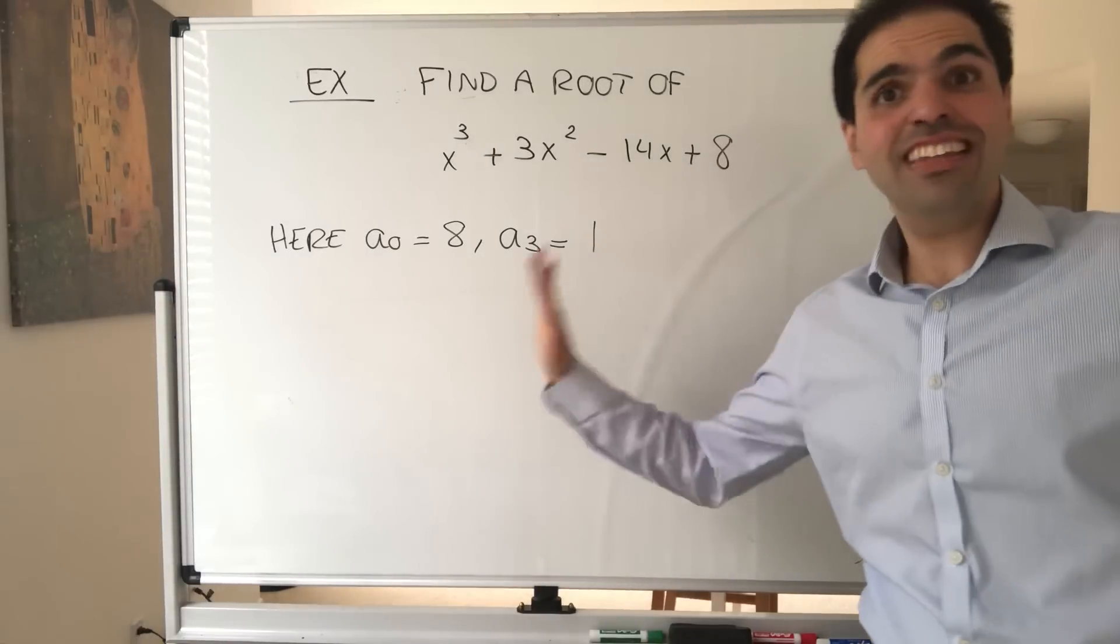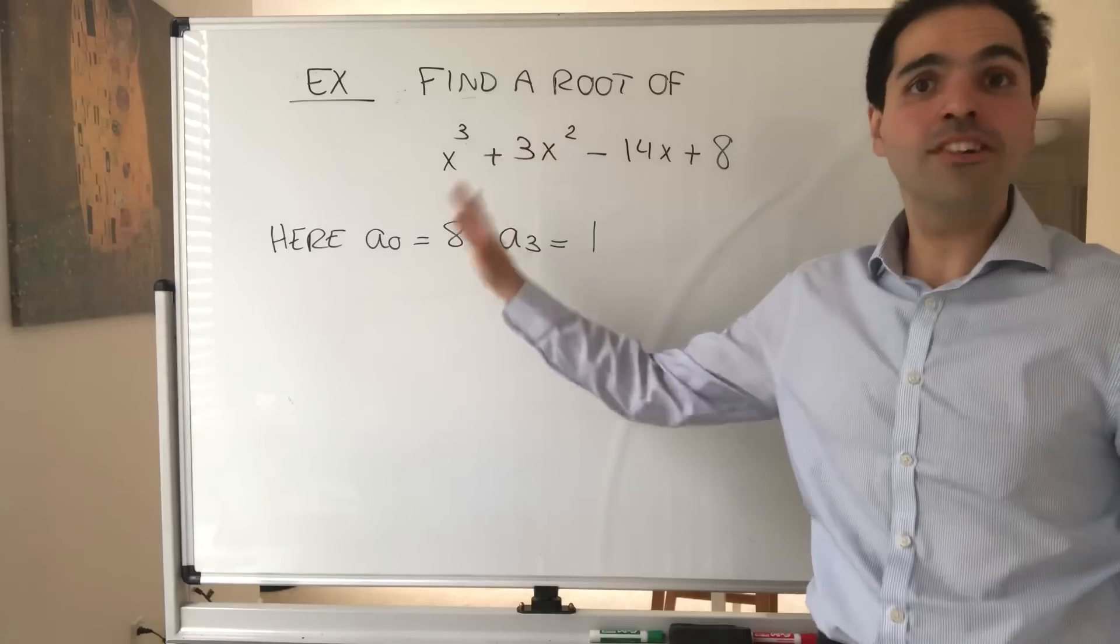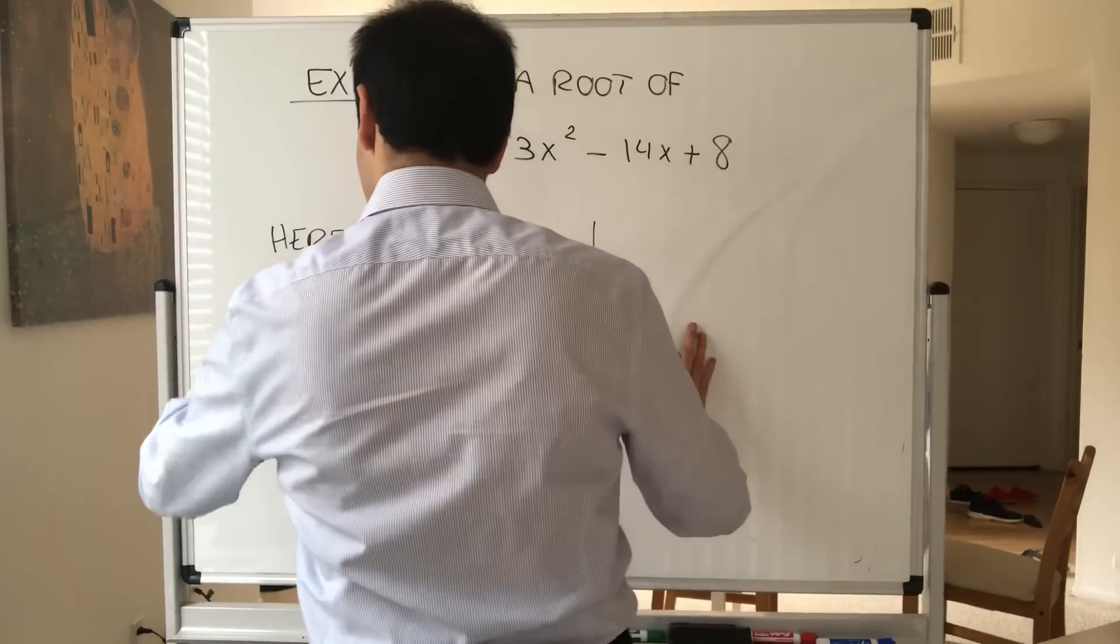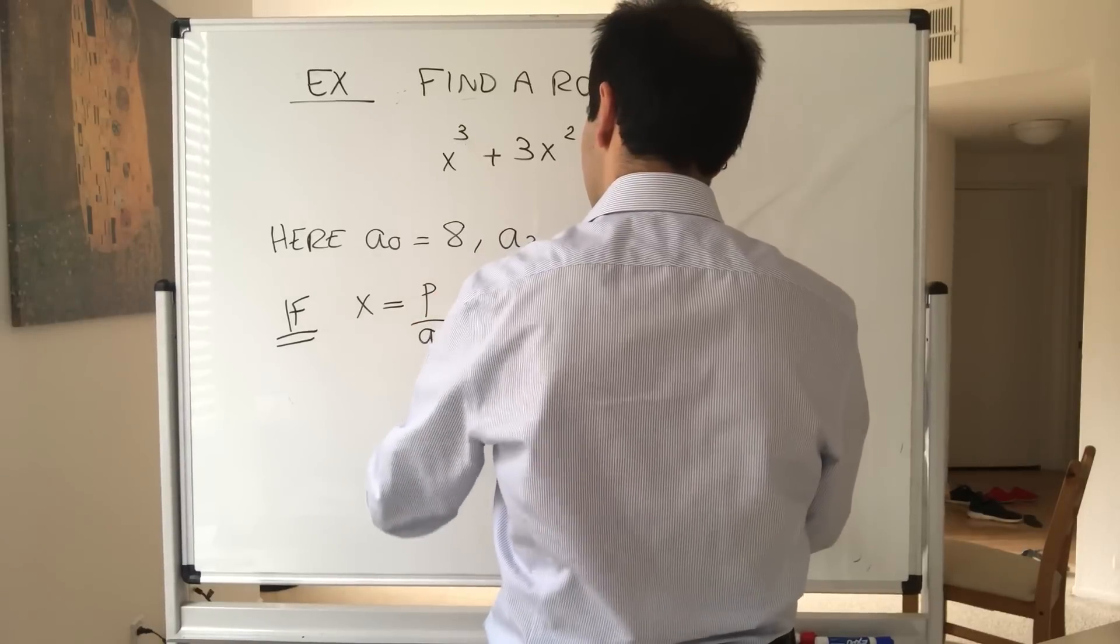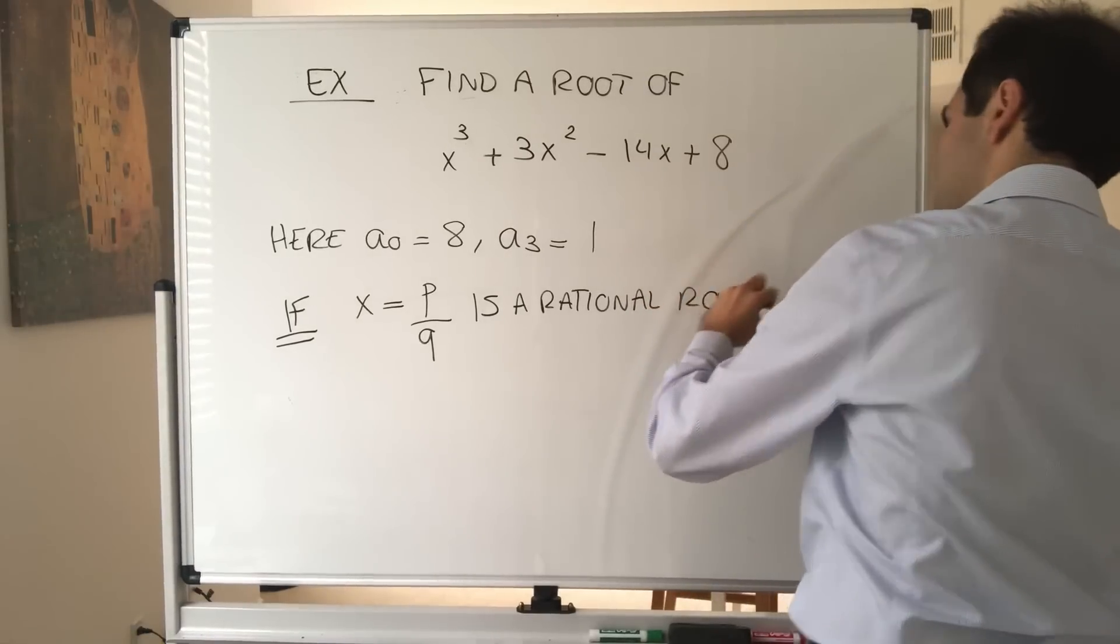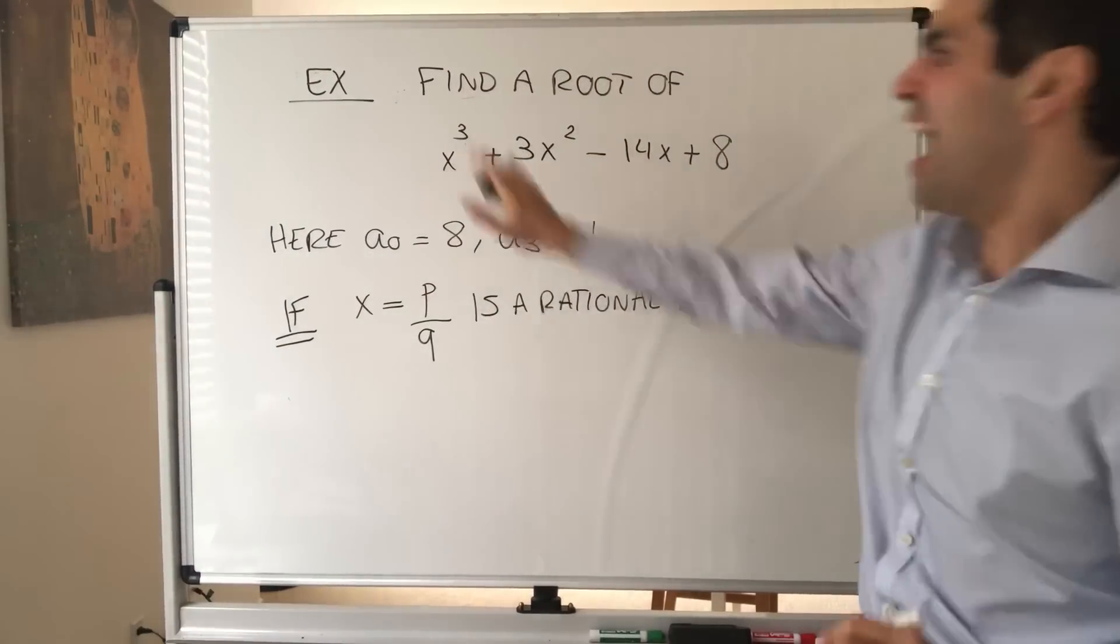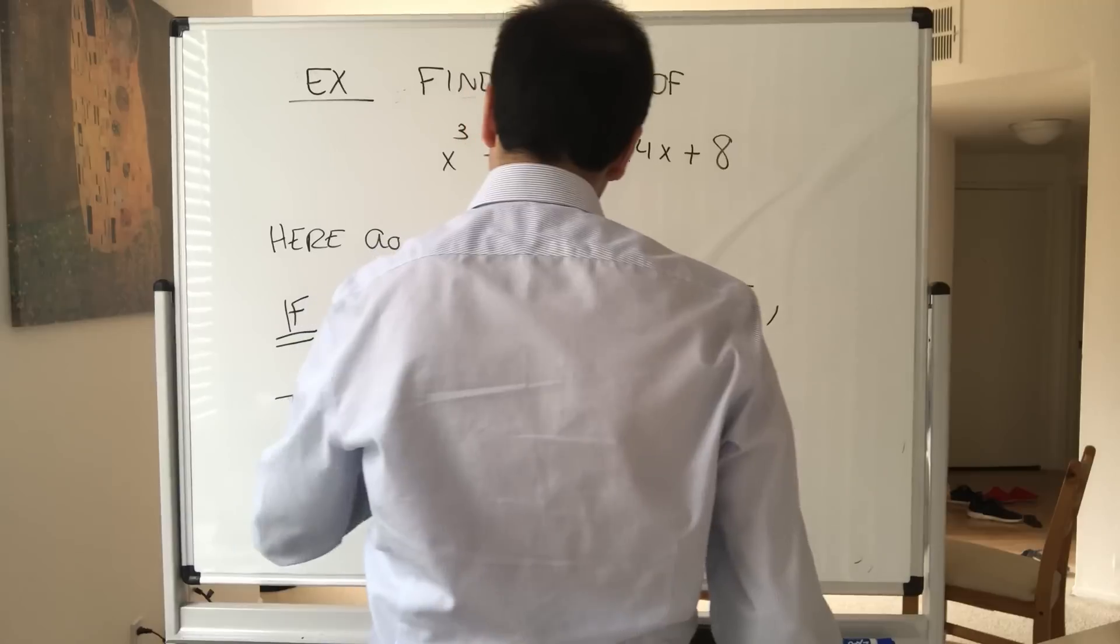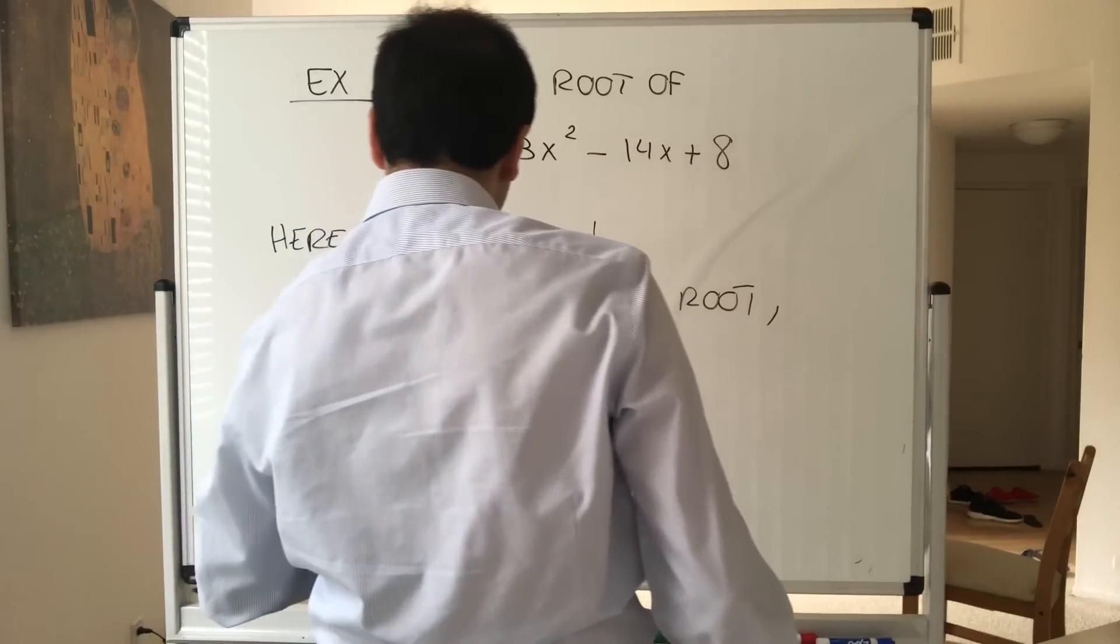Now we never said it has a rational root, and it doesn't necessarily have to have a rational root, but here we're kind of lucky, we'll see. So what this theorem says is if x equals p over q is a rational root, then p has to divide the constant term and q has to divide the leading term. p must divide 8 and q must divide 1.